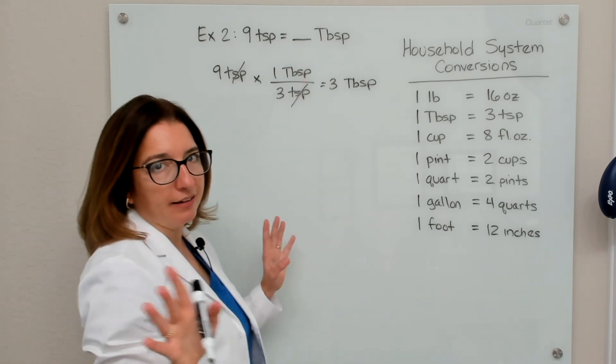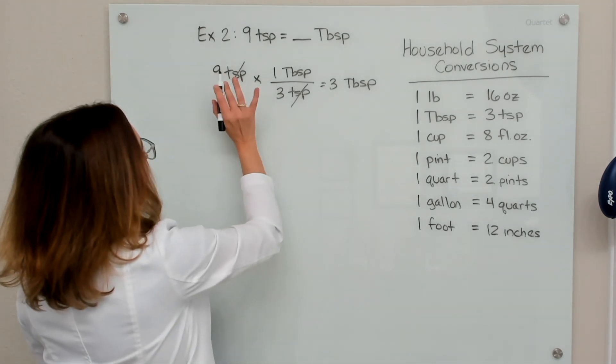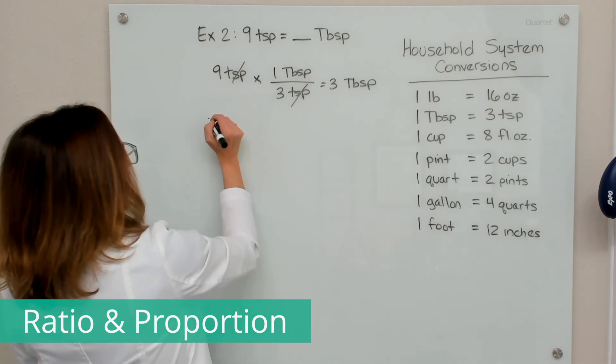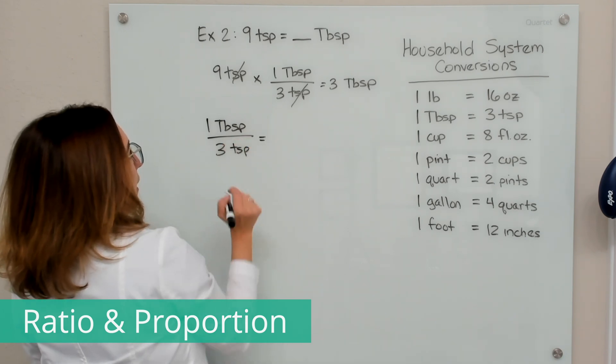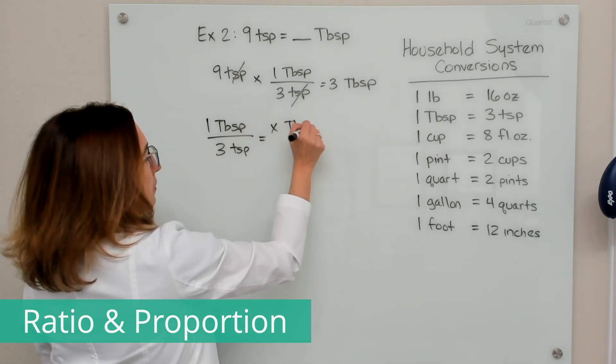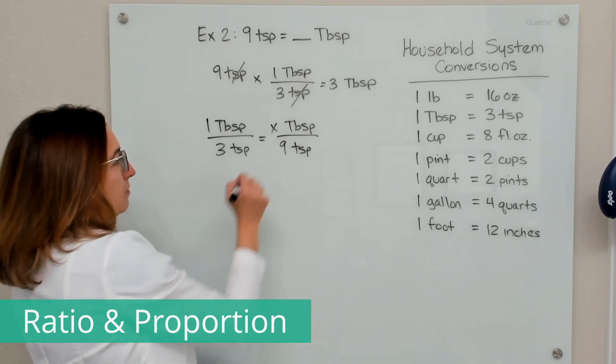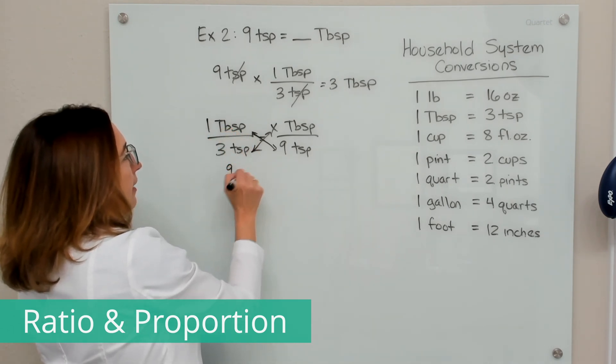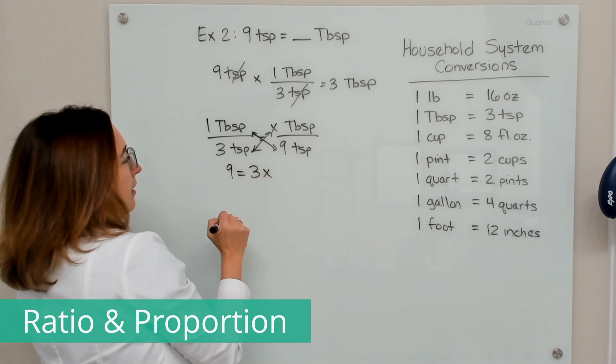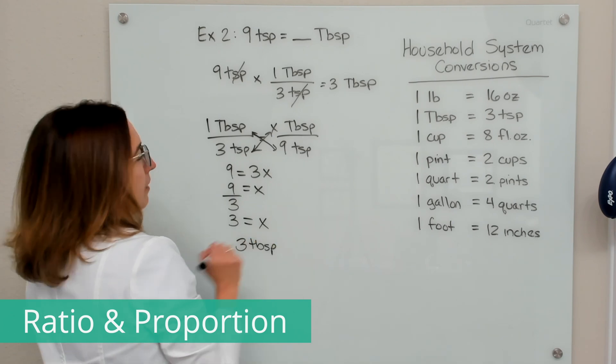You might have been able to do that in your head and that's cool. We're just working through it using these methods so you can get used to the methods. Okay, let's do this with ratio and proportion. So we know that one tablespoon equals three teaspoons. And we want to know how many tablespoons are in nine teaspoons. So x is our unknown value. So now we're going to cross multiply here. So 9 times 1 is 9, and 3 times x is 3x, and then we're just going to solve for x. So x equals 9 divided by 3 and x equals 3. So we have three tablespoons here as well. Get the same answer.